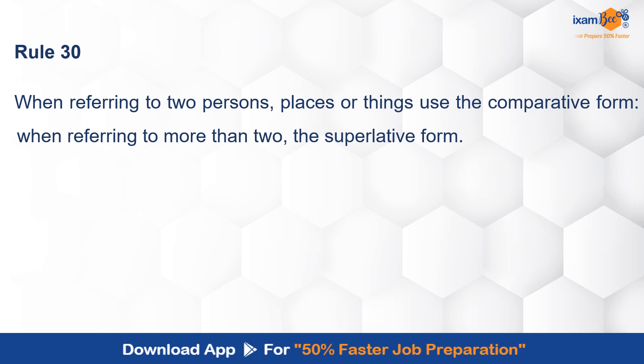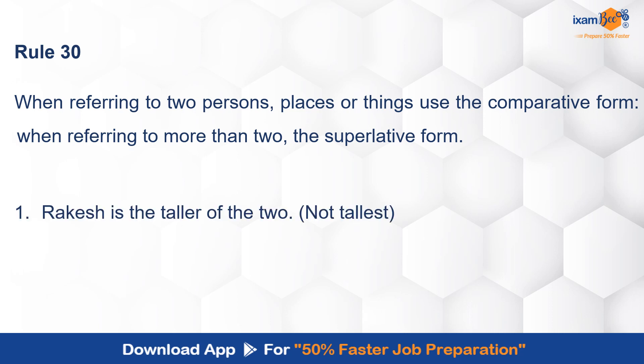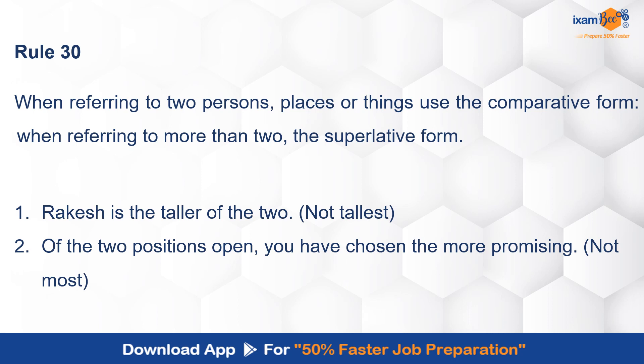The next rule: when comparing two people or things, use the comparative form; when comparing more than two, use the superlative form. For example: 'Rakesh is the taller of the two' — since there are two, use 'taller', not 'tallest.' Another example: 'Of the two positions open, you have chosen the more promising one' — with two options, use 'more', not 'most.' But if it were 'of all the positions open', then you would say 'the most promising one.' So 'more' is used for two, and 'most' for more than two.